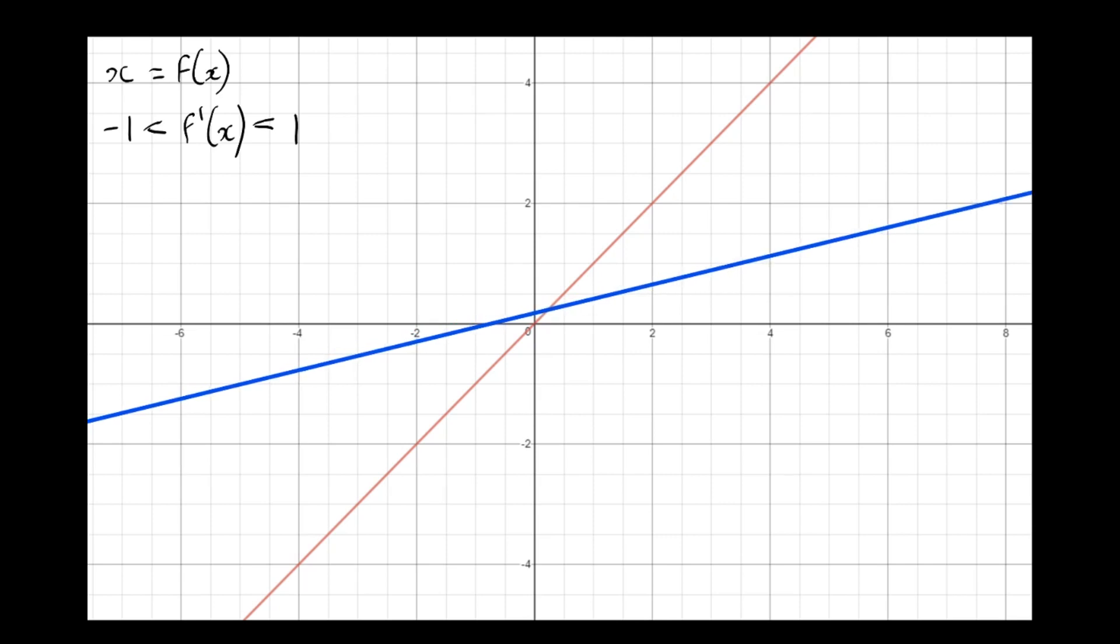So now, if we start trying to converge, well, first of all, let's take our start iteration. Let's say x equals minus 4. So, down to f(x), along to y equals x, to f(x), to y equals x, f(x), y equals x.